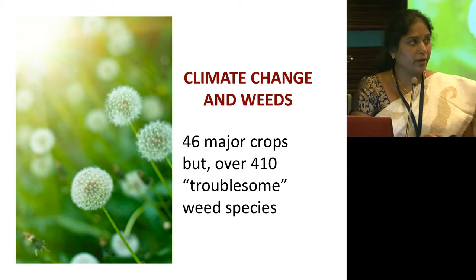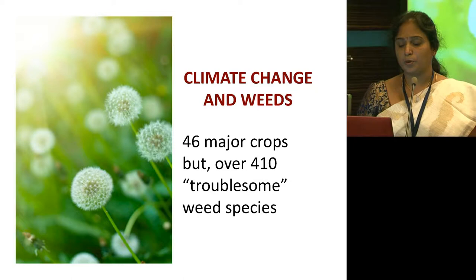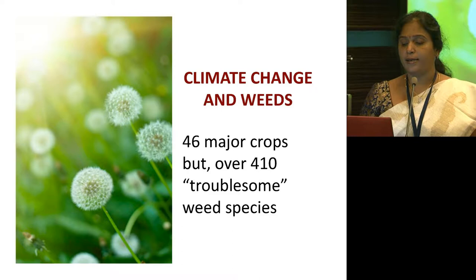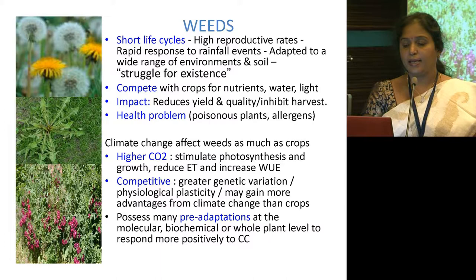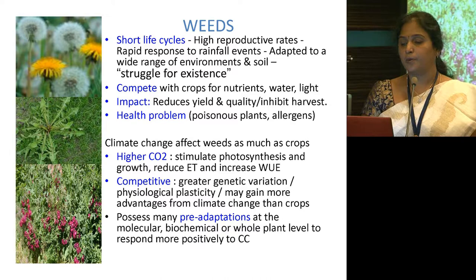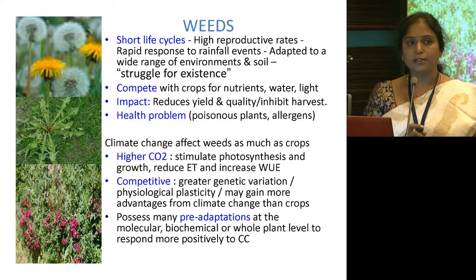Coming to climate change and weeds: there are 46 major crops grown globally for food production, but more than 410 troublesome weed species are prevailing. Weeds have a very short life cycle, high reproductive rate, rapid response to rainfall events, and are adapted to a wide range of environments and soils. As Darwin said, struggle for existence is the concept for weeds.